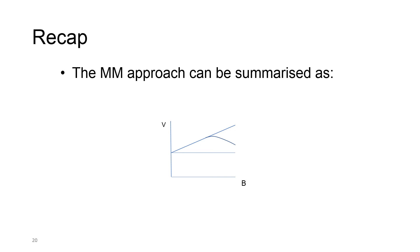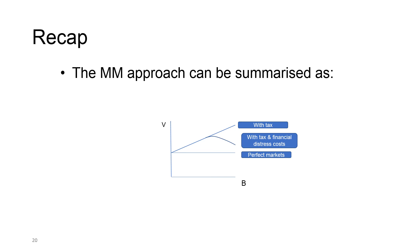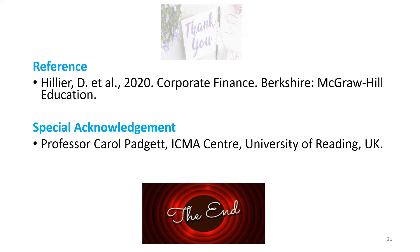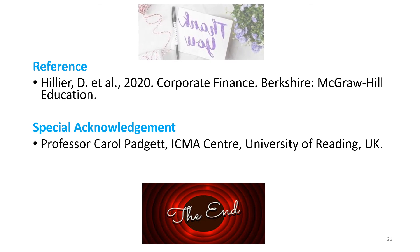We have come to the end of the presentation on capital structure. To recap, there are three scenarios covered: first, a perfect market with no tax; second, a world with tax; and third, a world with tax and financial distress costs. I'm sure you understand what the figure means and what is represented by the three lines — if not, you can always watch the videos again. I hope you have benefited from this video. If you like it, please click like, subscribe, or share. Thank you, see you, and goodbye!